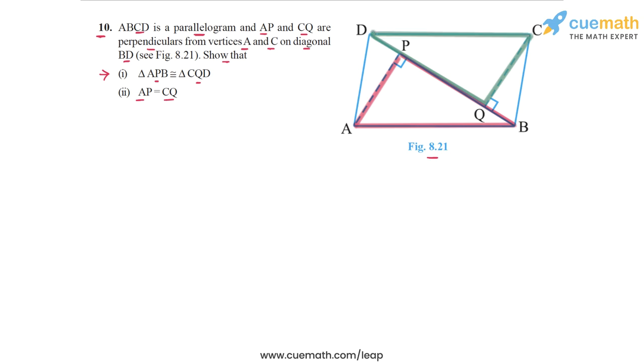So we are going to compare these two triangles and show that these two are congruent. So in triangle APB and triangle CQD, what are the parts which are equal?